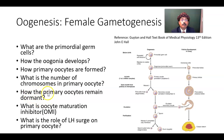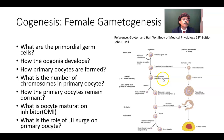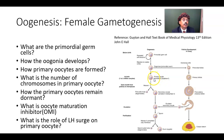How does the primary oocyte remain dormant? The primary oocyte goes through meiosis 1, but it is arrested in prophase 1 during the diplotene stage — we call it the dictyotene stage. So in the dictyotene stage it is arrested in prophase 1, and it will remain arrested until puberty.